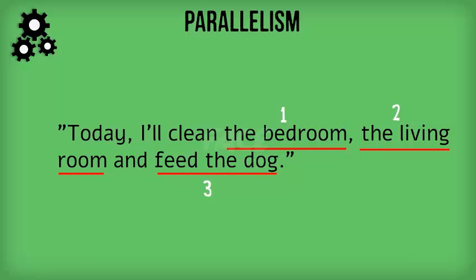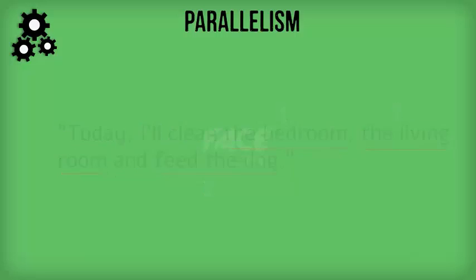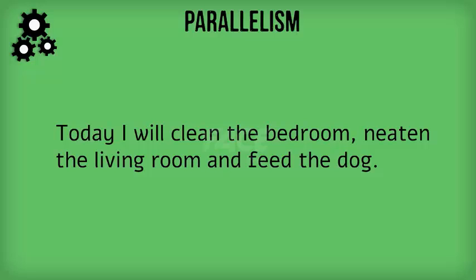This is how the correct sentence would read: Today, I will clean the bedroom, neaten the living room and feed the dog. Here, the bedroom is the object of the verb 'clean,' the living room is the object of the verb 'neaten,' and the dog is the object of the verb 'feed.' Now, does it make sense?